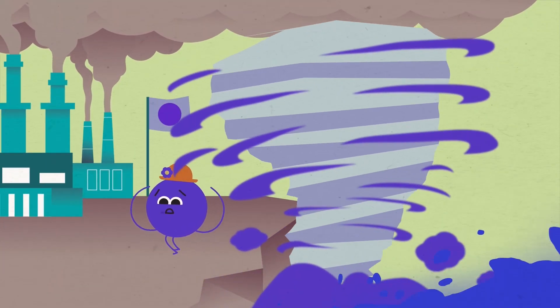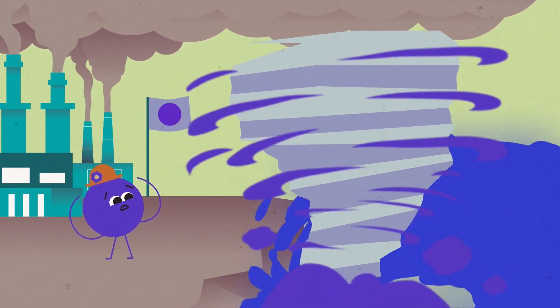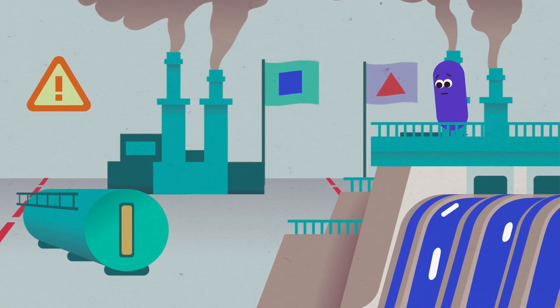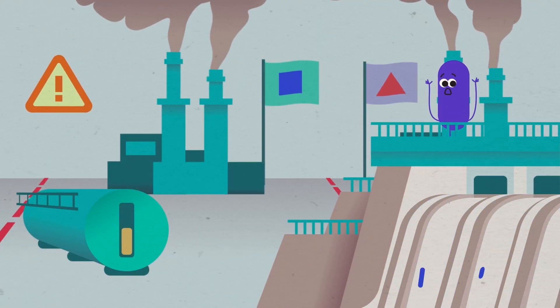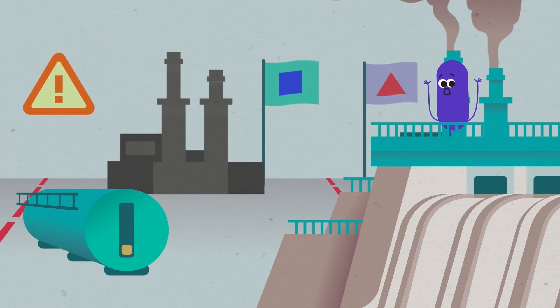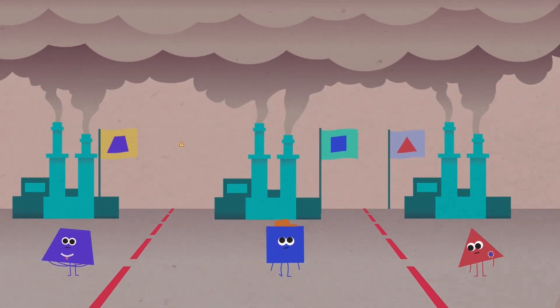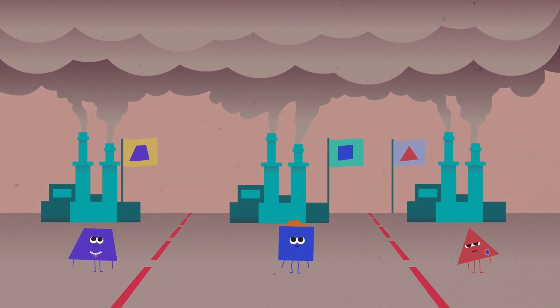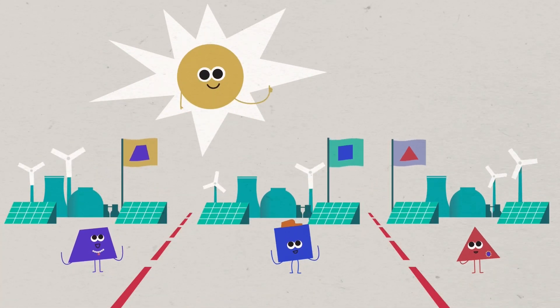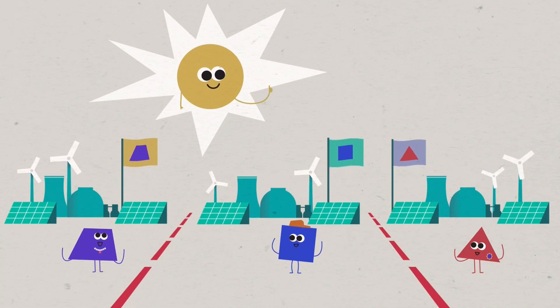Climate change is causing more extreme weather events, disrupting energy, and hotter temperatures are drying up the water sources needed to operate many power plants. If many countries replaced more of their fossil fuels with renewable sources, everyone's energy security would increase from a reduction in climate change.